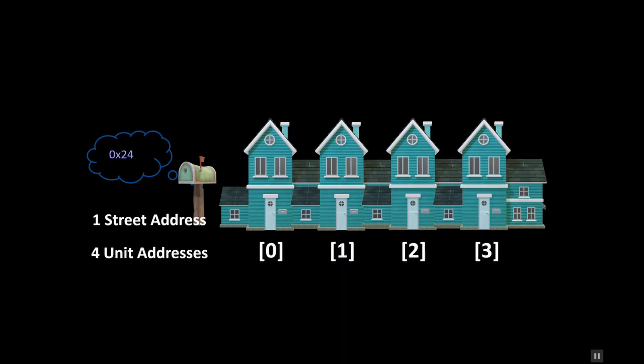Let's look at an analogy that demonstrates an array and show a side-by-side comparison of how it possesses the same components of a regular variable we have already seen. Suppose you have a complex of row housing or townhouses. The complex itself has one street address, while each unit has its own unit address. In the case of an array, we call these elements.